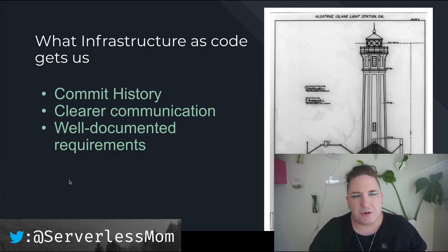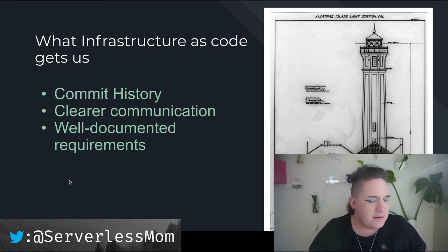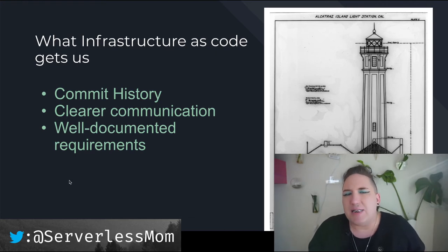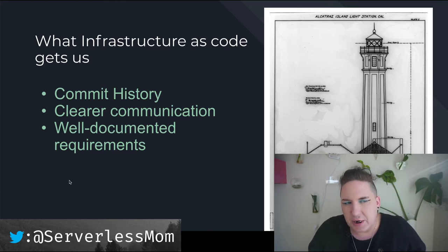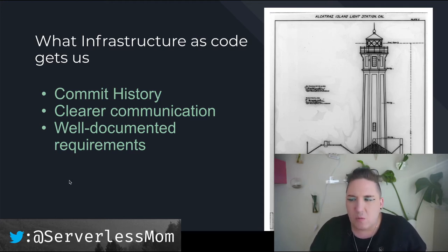What we get from infrastructure as code is a commit history, clear communication to the team of what's changed and by whom — not for blame, but for knowing who to talk to and what the possible motivations for changes might have been. The last benefit is well-documented requirements. By documenting that the memory needs of certain instances has changed, we can document other changing requirements rather than going in ad hoc and bumping up memory. We actually get that documented because all of our infrastructure config is in one place.